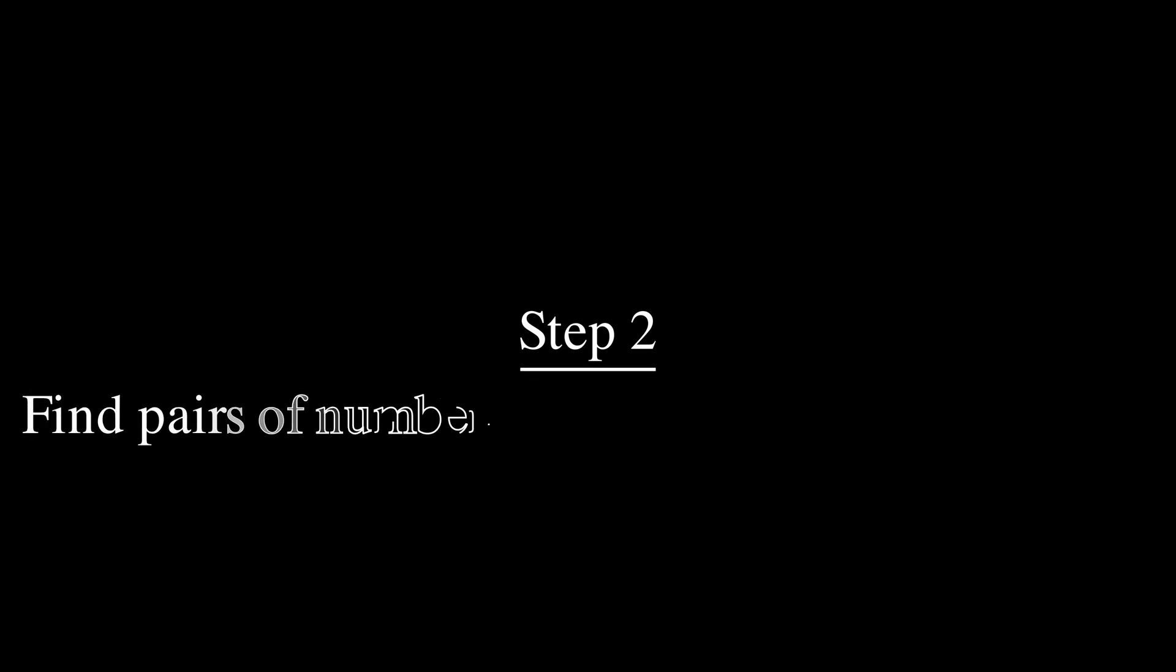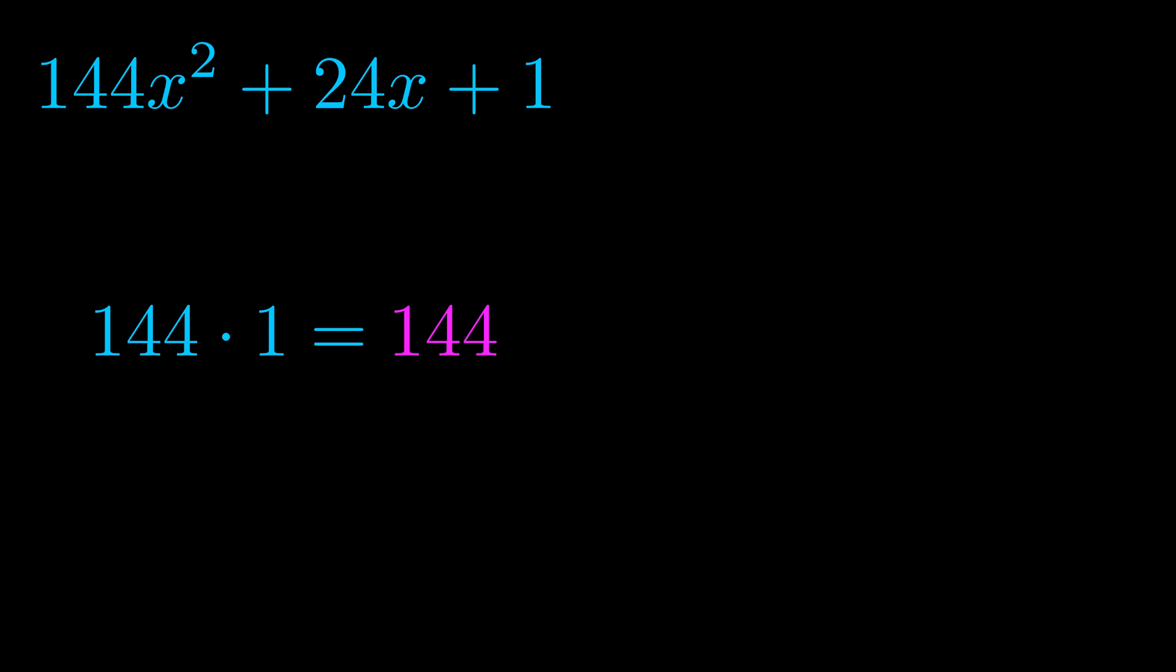Step two is to try to find all of the pairs which multiply to this number. Now it turns out you don't really need to find all of them, but go ahead and write down as many numbers as you can that multiply to the magenta value for now. Pause the video and resume when you're ready to continue.